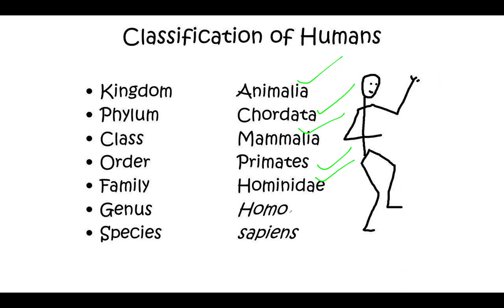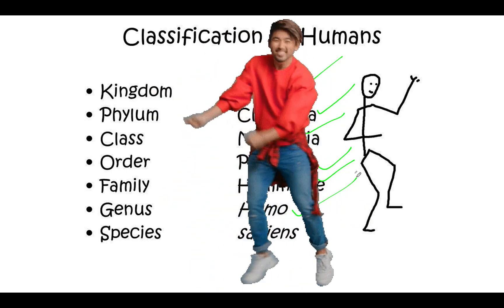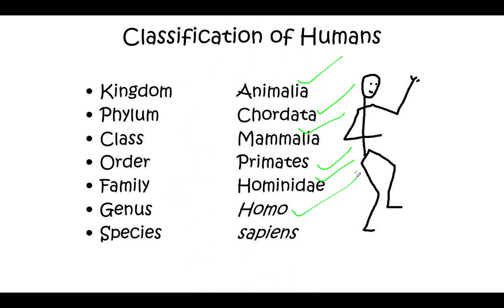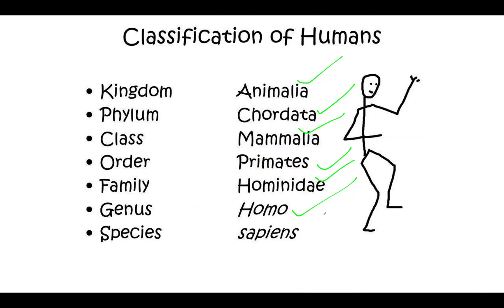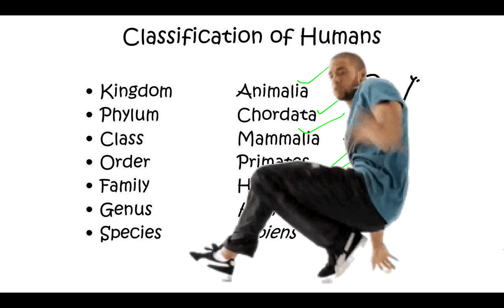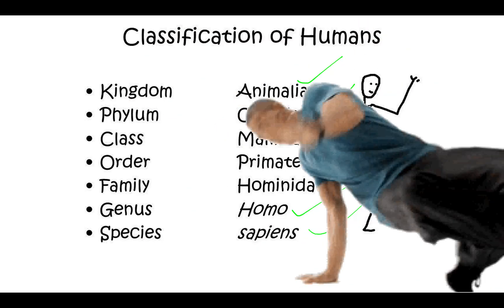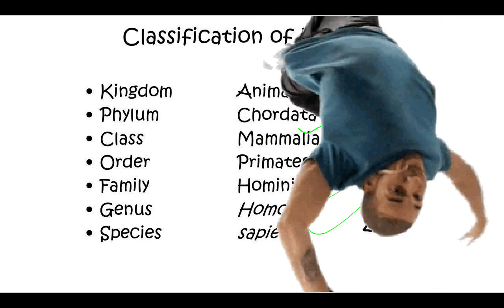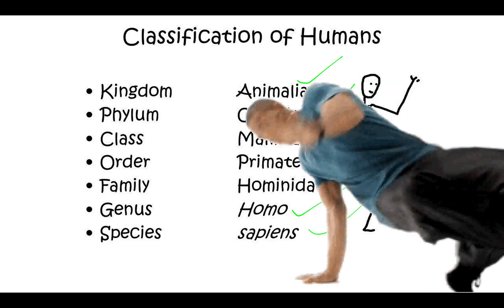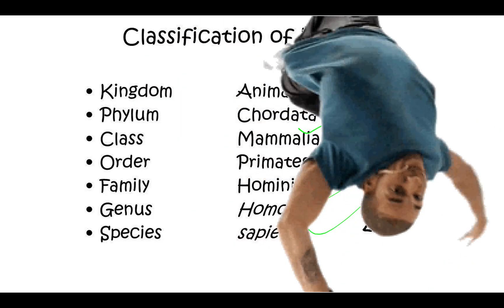The genus we belong to is Homo, because we are hominids with an S-curved spine, which makes us recognizable as human. And finally, the species we belong to is Homo sapiens, characterized by a high forehead, well-developed chin, and thin skull bones. That is the classification of humans.